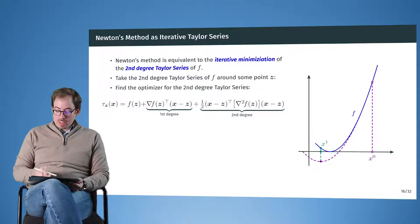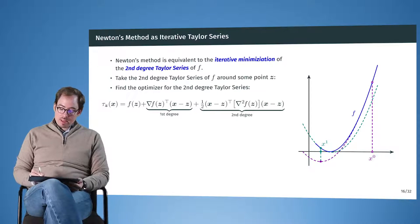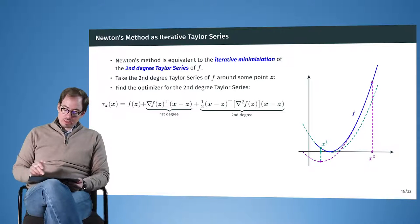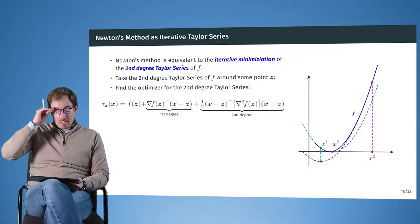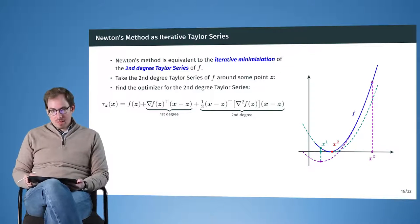And so here we have selected now the location where the Taylor expansion, where the gradient of the Taylor expansion is zero, select this new point, do a new Taylor expansion around that point, select the point where the gradient is zero, and so on and so on. And quite rapidly again, we will converge to the point where the gradient of the original function f is zero. And this is exactly our minimizer.